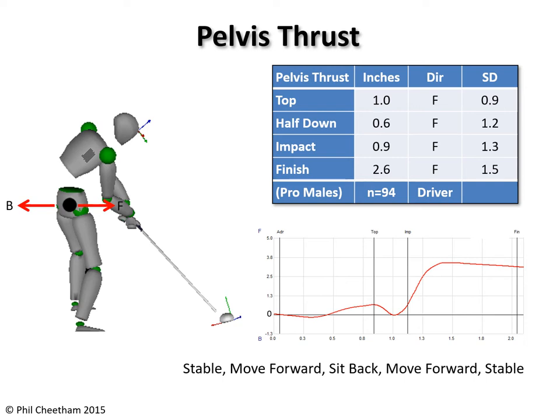The address position is set to zero. Above the line is positive, showing pelvis movement forward relative to address, and below the line is negative, showing pelvis movement backward. Looking from left to right, the golfer moves from address to top, then to impact, and finally to finish, with vertical black lines marking each key position. The area between address and top is backswing, between top and impact is downswing, and between impact and finish is follow through.